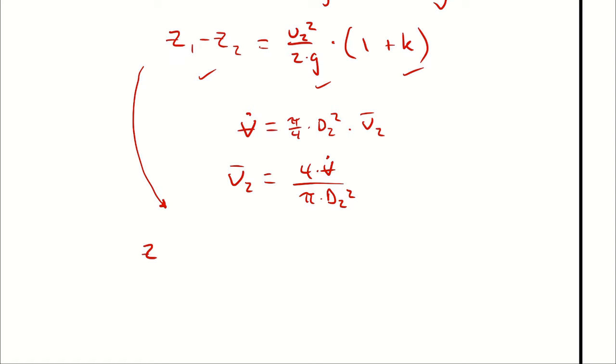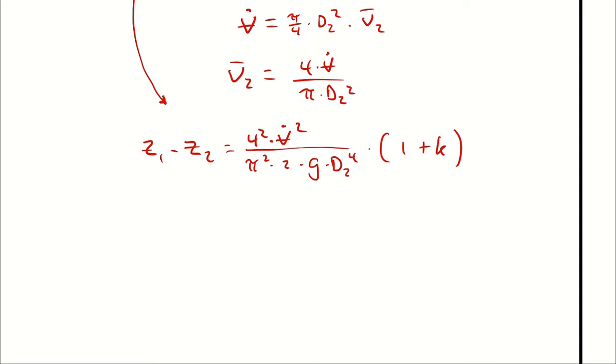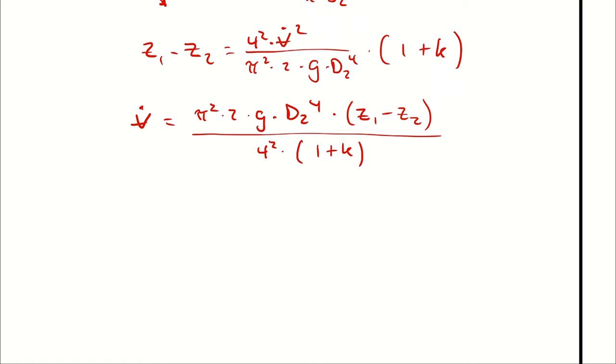Then I can solve for the volumetric flow rate. Now I know the diameter at state 2, I know the elevation change, I can assume gravity. All I need to do is look up k.